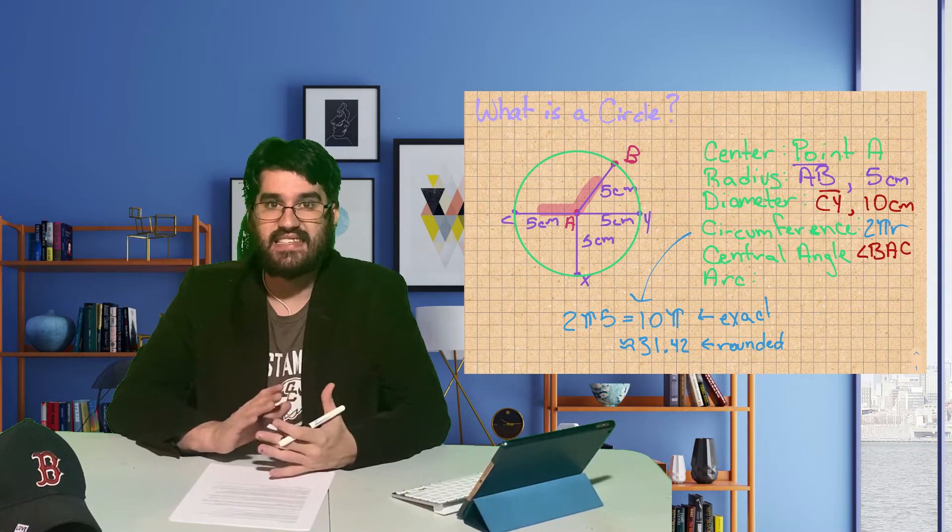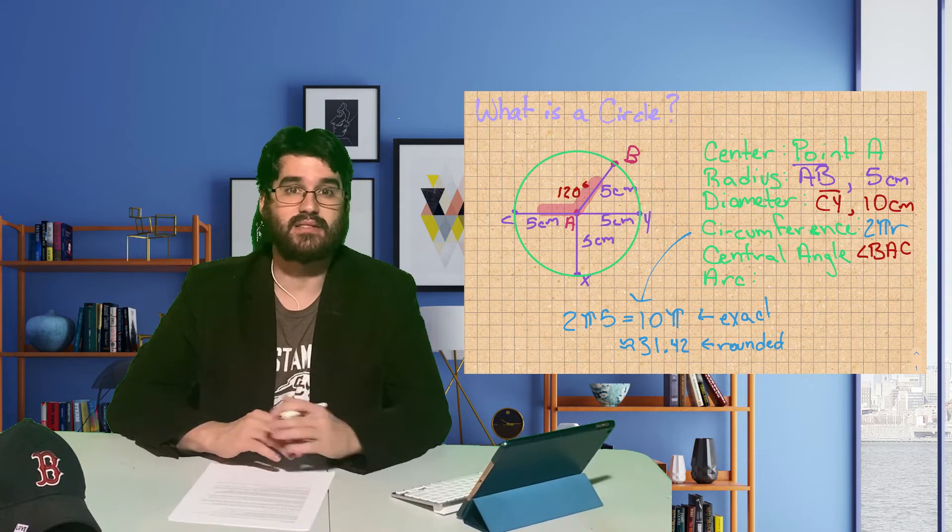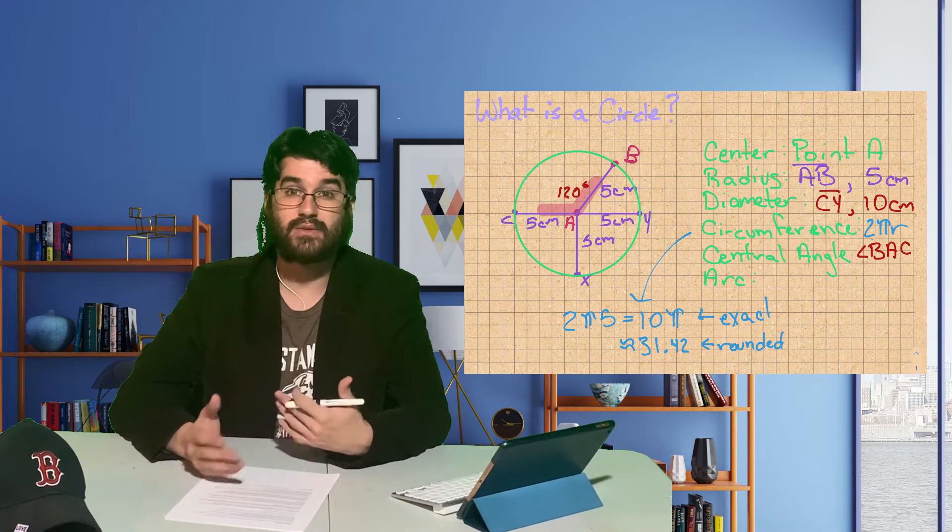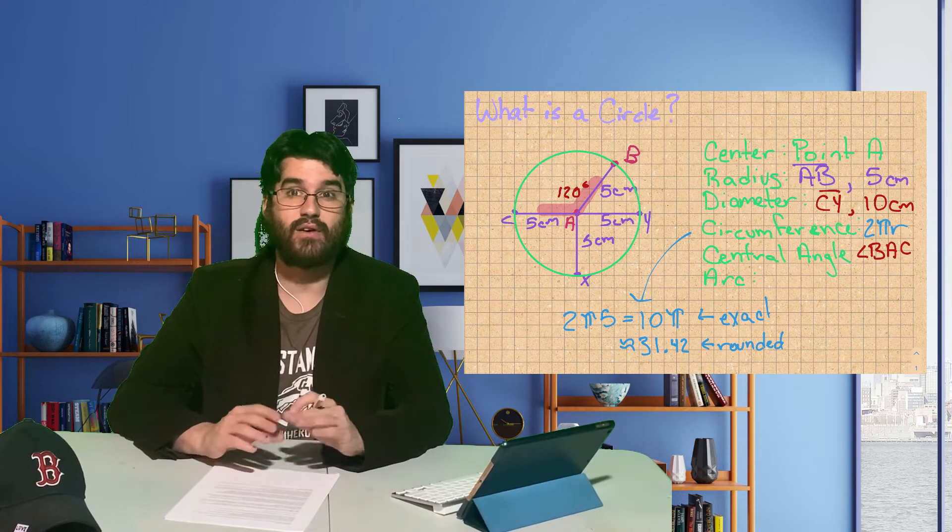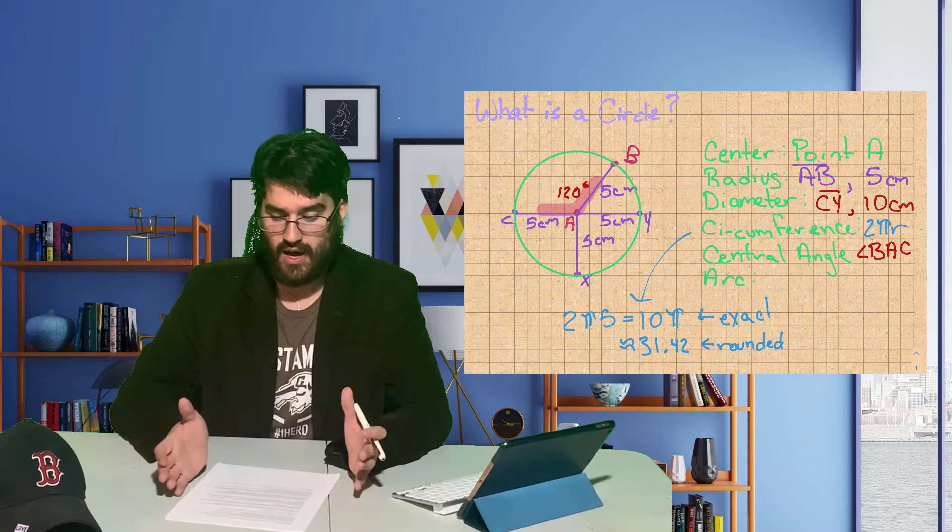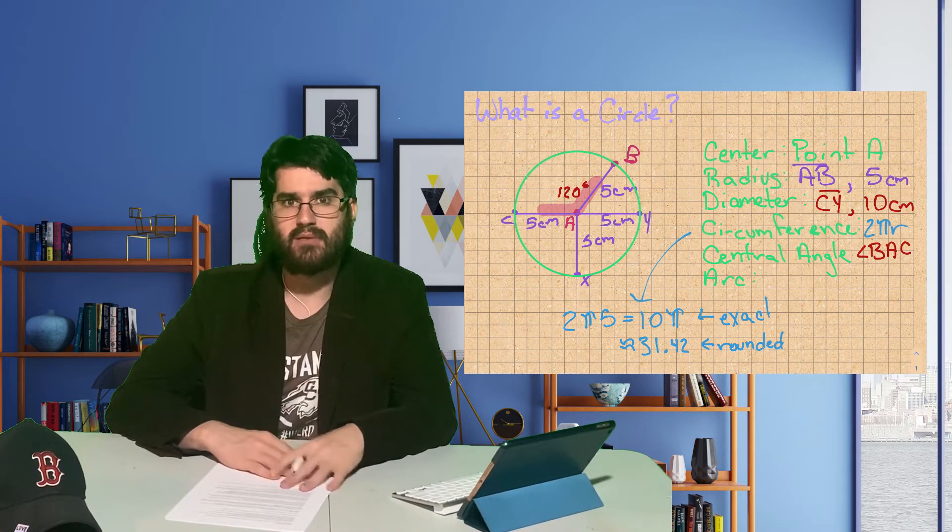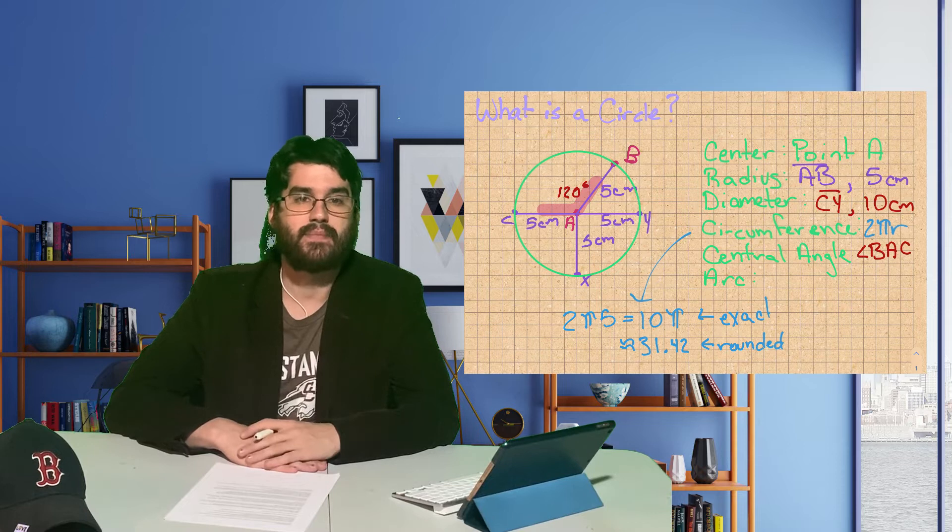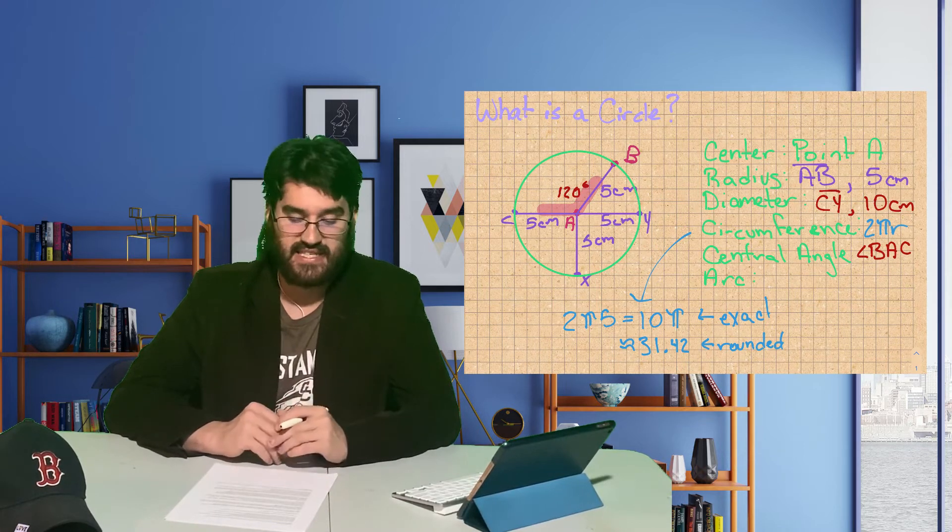Let's say that angle BAC is 120 degrees. Because we have angle pairs, we can use any of our other relationships we've used. Angle BAC is supplementary to angle BAY, so angle BAY has to be 60 degrees.